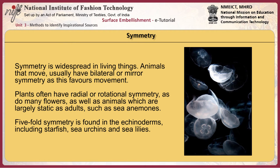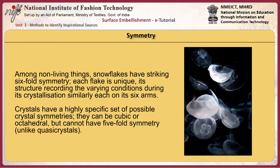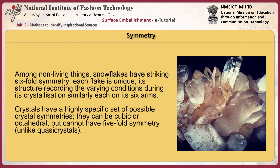Symmetry is widespread in living things. Animals that move usually have bilateral or mirror symmetry, as this favors movement. Plants often have radial or rotational symmetry, as do many flowers as well as largely static animals such as sea anemones. Five-fold symmetry is found in echinoderms including starfish, sea urchins and sea lilies. Among non-living things, snowflakes have striking six-fold symmetry — each flake is unique, its structure recording the varying conditions during its crystallization. Crystals have a highly specific set of possible crystal symmetries; they can be cubic or octahedral but cannot have five-fold symmetry.